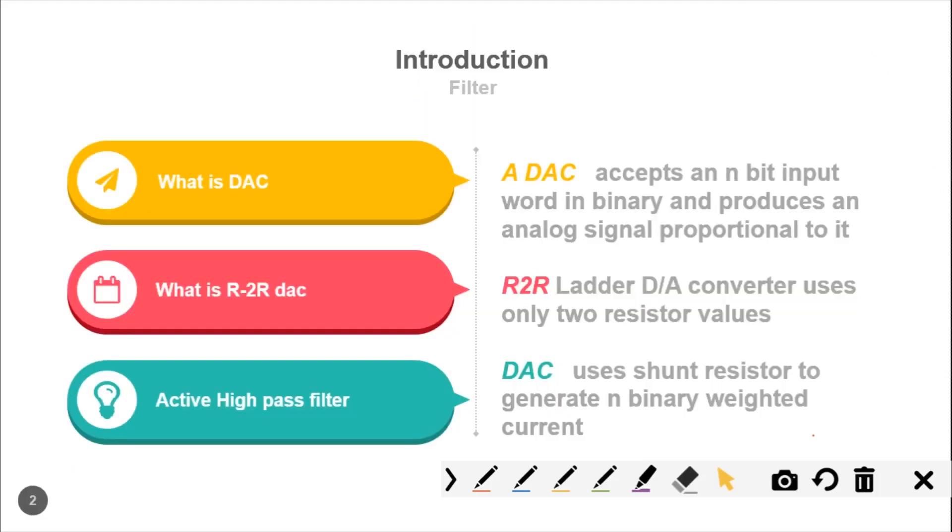It uses resistor networks in shunt and series form to convert different levels of current into analog form. DAC uses shunt resistors to generate n binary weighted currents. Depending on the binary values provided at the input, it produces an appropriate output using resistor circuitry.